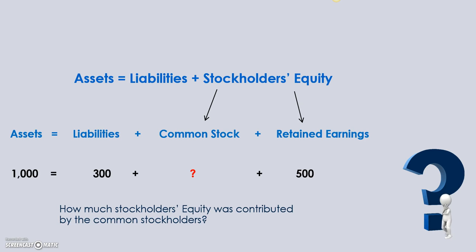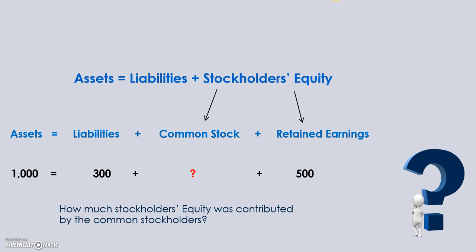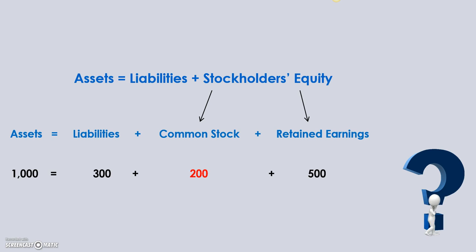Our basic accounting equation still has to hold true. If you expand it out for our two additional categories — common stock and retained earnings — you can probably guess what the question mark would be. If we have assets of $1,000, liabilities of $300, and retained earnings of $500, your common stock would have to be $200 in order to balance the equation.